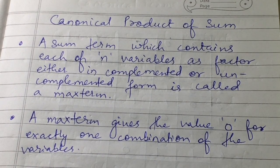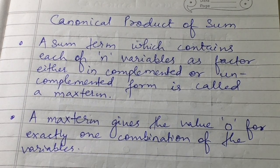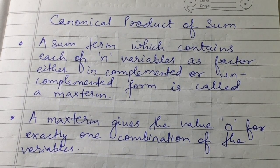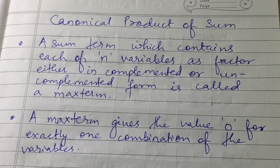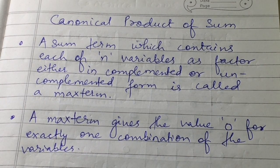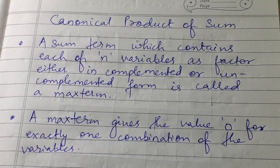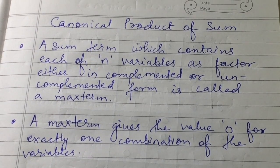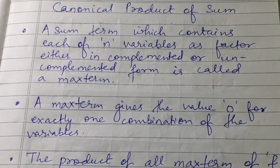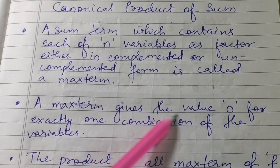Now we will see canonical product of sum. A sum term which contains each of n variables as a factor either in complemented or uncomplemented form is called a max term. Unlike min terms in canonical SOP, max terms are used in canonical POS. A max term gives the value 0 for exactly one combination of the variables.